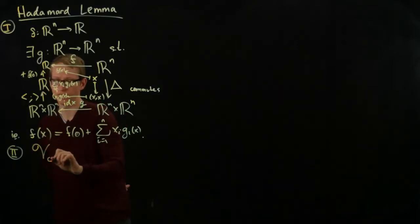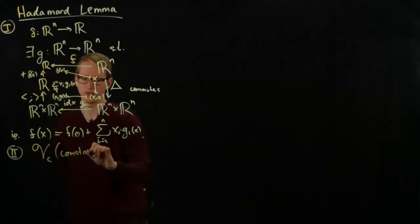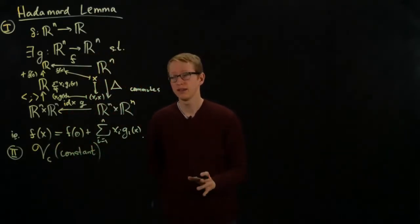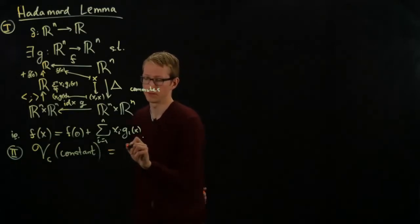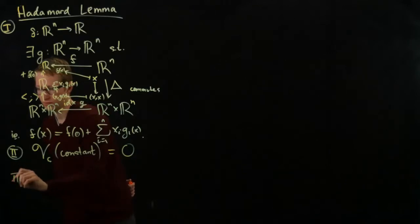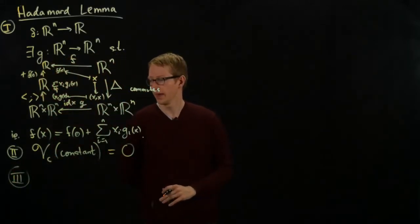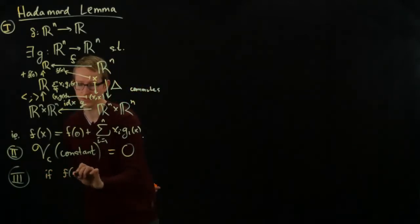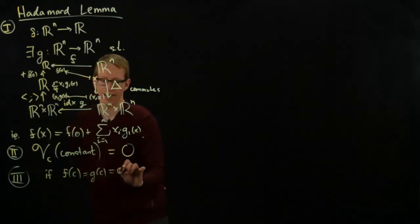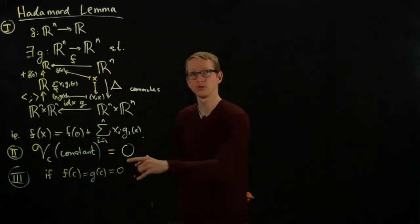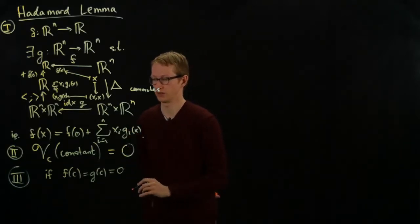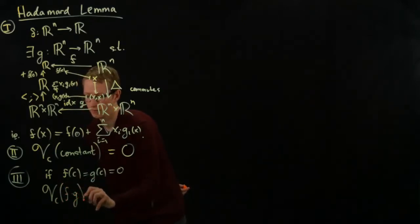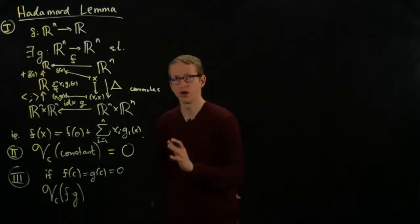The first of which is v_c applied to any constant function, so v_c I'm thinking of as an arbitrary derivation on R^n at the point c is 0. This is true for all constant functions. And third, if f and g are functions that satisfy the condition that their value at c is 0, and again we're assuming that these are differentiable in order for this derivation to make sense, then if I apply to their product this derivation, I also get 0.